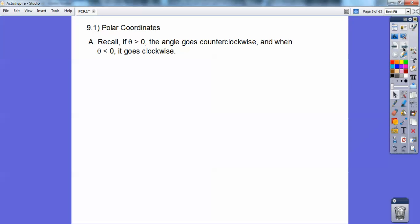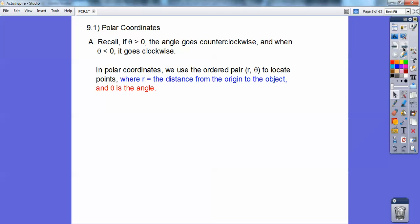Recall, if an angle is greater than zero, that's counterclockwise, and if it's less than zero, it goes clockwise. In polar coordinates, we use the ordered pair r, theta to locate a point, and r is the distance. It's like your radius from the origin to the object, and theta is the angle.